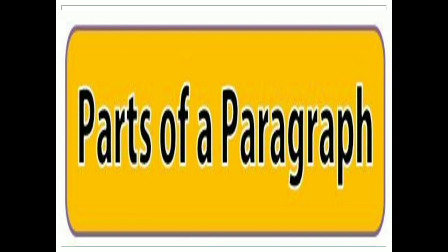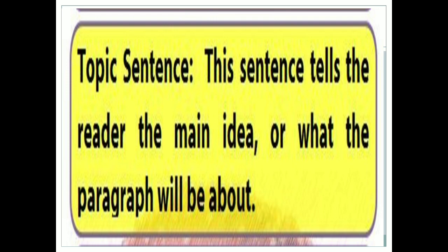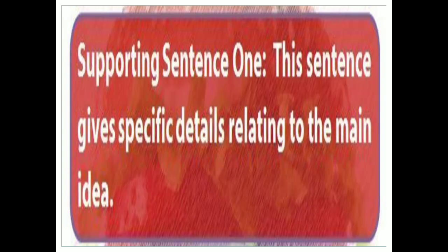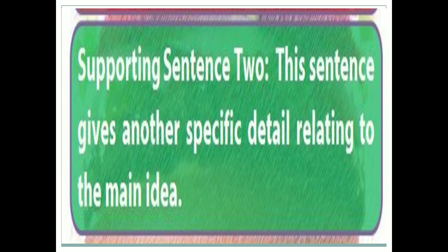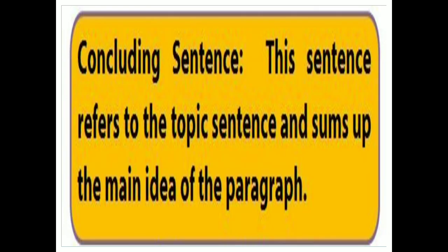These are the four steps to remember while writing a paragraph. Now, a quick recap of the parts of a paragraph. The topic sentence tells the reader the main idea — what the paragraph will be about — so readers know what they are going to read. Supporting sentence 1 gives a specific detail of the main idea. Another supporting sentence gives another specific detail relating to the main idea, supporting whatever we are talking about. Finally, the concluding sentence refers to the topic sentence and sums up the main idea of the paragraph — it ends the paragraph and wraps up all the ideas.